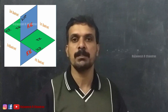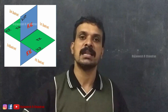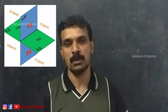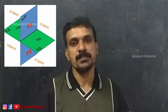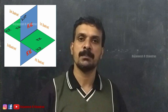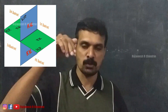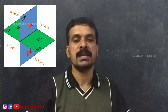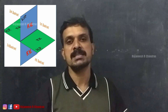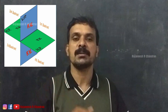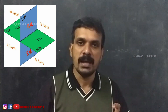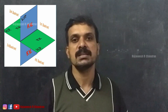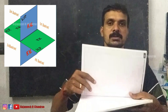In the two-plane system or quadrant system, two planes are used for projection. One is the horizontal plane, which is parallel to the ground, and the other is the vertical plane, which is perpendicular to the ground. The front view of the object is always projected on the vertical plane and the top view on the horizontal plane. These two planes divide the space into four compartments known as quadrants — first, second, third, and fourth.